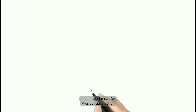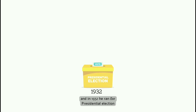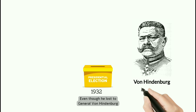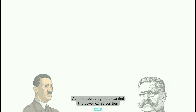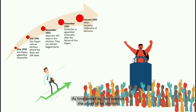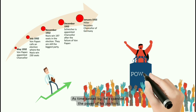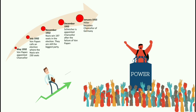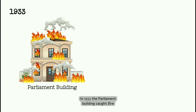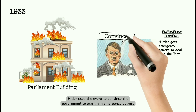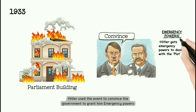In 1932, he ran for presidential elections. Even though he lost to General von Hindenburg, he was appointed as the Chancellor. As time passed by, he expanded the power of his position. In 1933, the parliament building caught fire, and Hitler used the event to convince the government to grant him emergency powers.